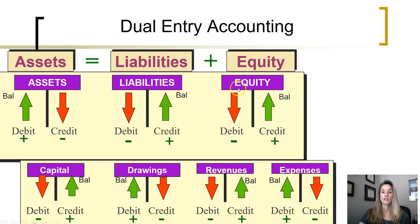In total, overall equity has a credit balance. Overall, to increase equity, we would credit it and debit it to decrease.